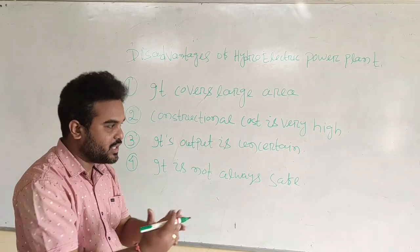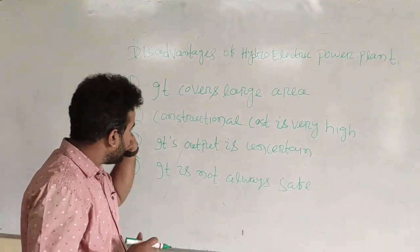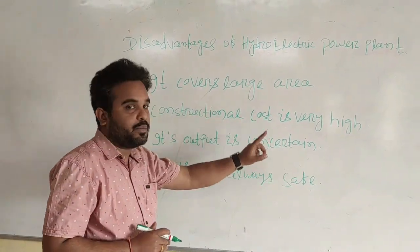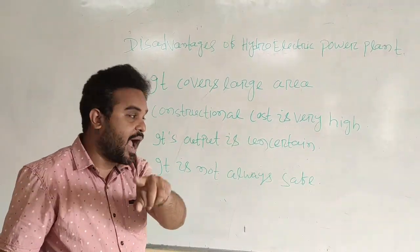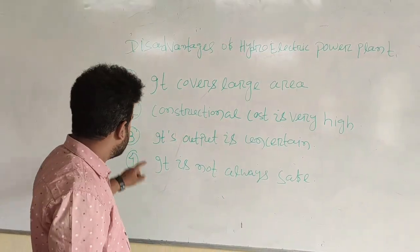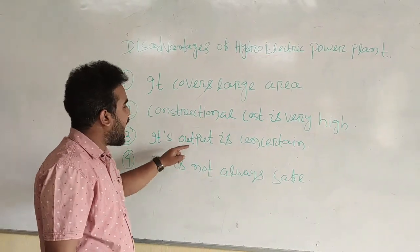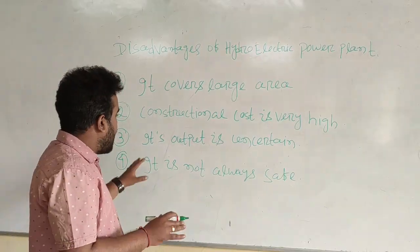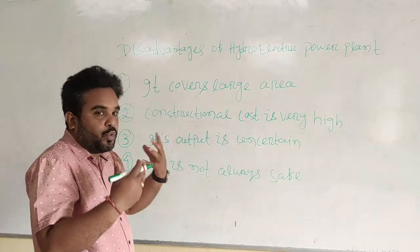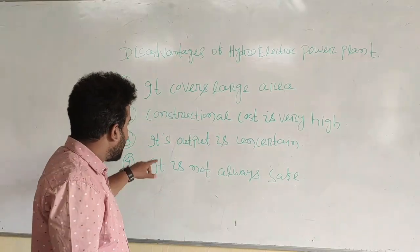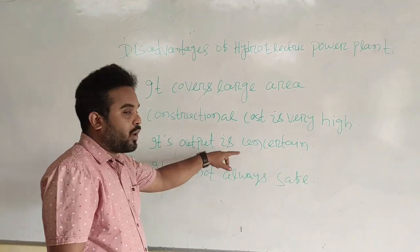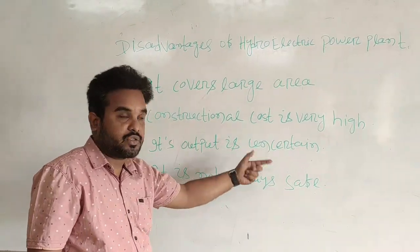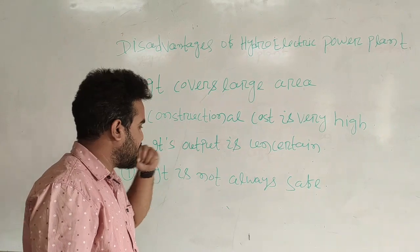Construction cost is very high, and since it covers a large area, large things will be required, so construction cost must be added. Second disadvantage: the output is uncertain. We don't know how much output we will get. So it is always uncertain — these are disadvantages.